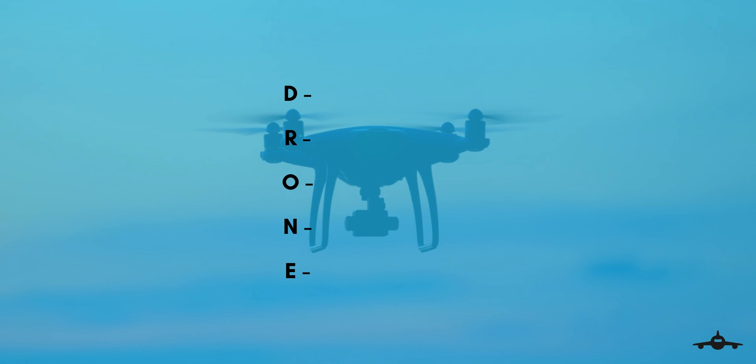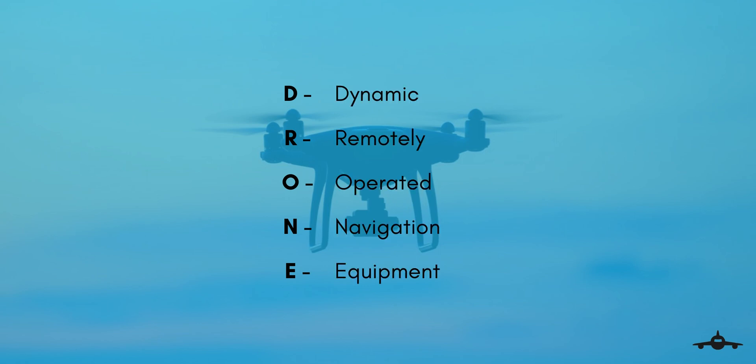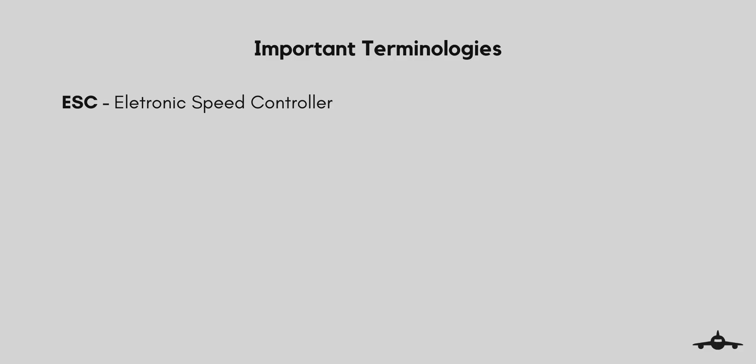Now, what are drones? Basically, drone stands for Dynamic Remotely Operated Navigation Equipment. Most commonly, drone refers to an unmanned aerial vehicle or it can also be an unmanned underwater vehicle.